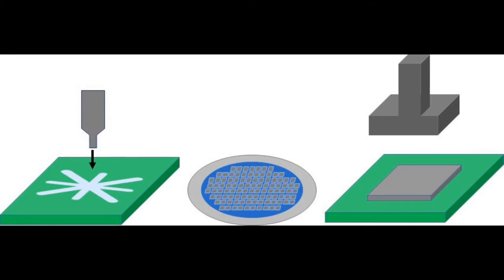Die attach process is to attach die on substrate. And substrate can be lead frame, laminate, ceramic, and so on.